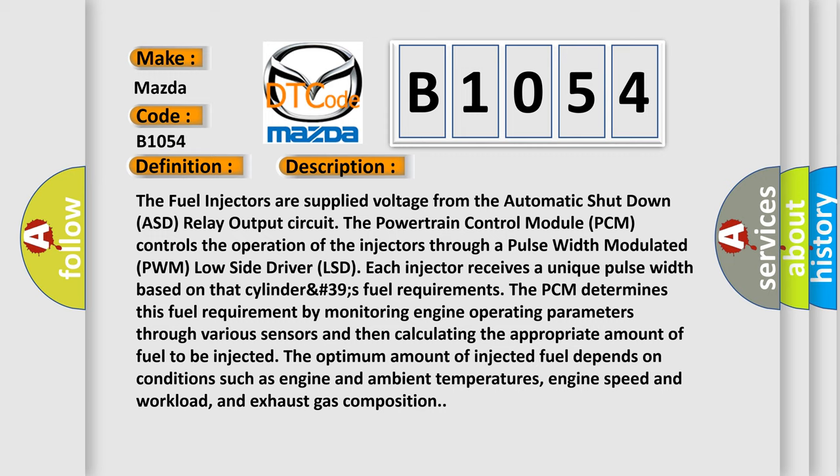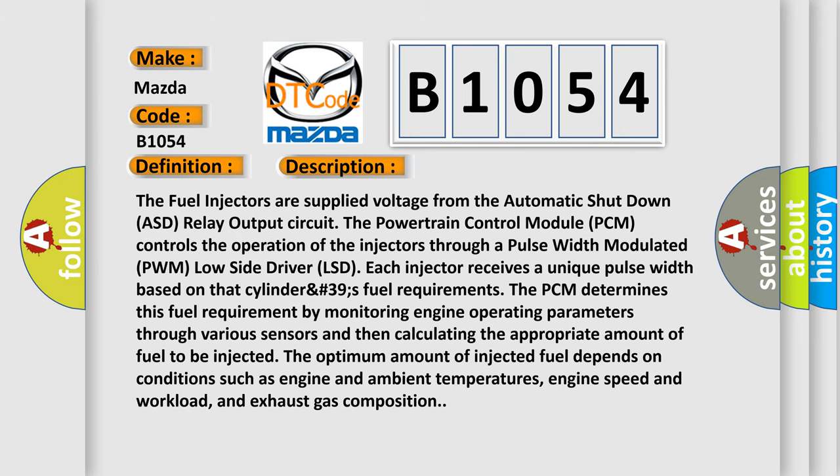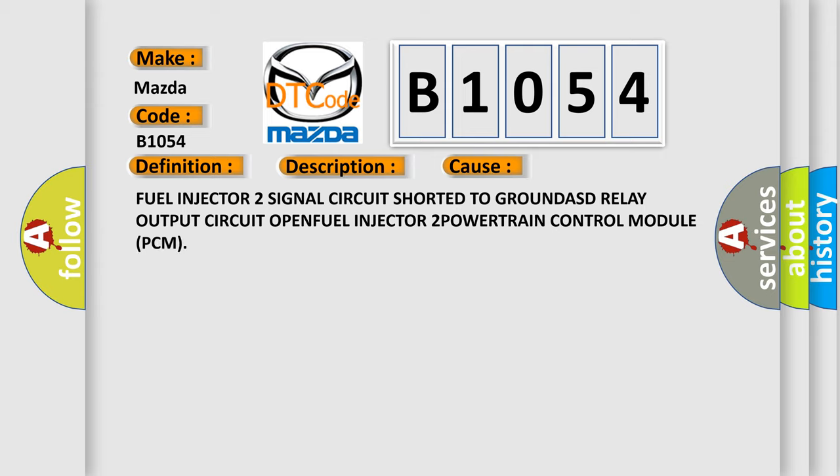The PCM determines fuel requirements by monitoring engine operating parameters through various sensors and calculating the appropriate amount of fuel to be injected. The optimum amount depends on conditions such as engine and ambient temperatures, engine speed and workload, and exhaust gas composition. This diagnostic error occurs most often in these cases: Fuel Injector 2 signal circuit shorted to ground, ASD relay output circuit open, or a fault in the Fuel Injector 2 Powertrain Control Module (PCM).